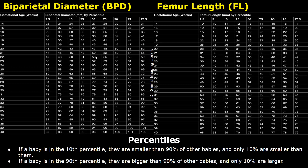If a femur length measurement is 37 millimeters for a 22-week fetus, it is in the 25th percentile according to this table. This measurement is smaller than 75 percent of other fetuses, and only 25 percent are smaller than this fetus.